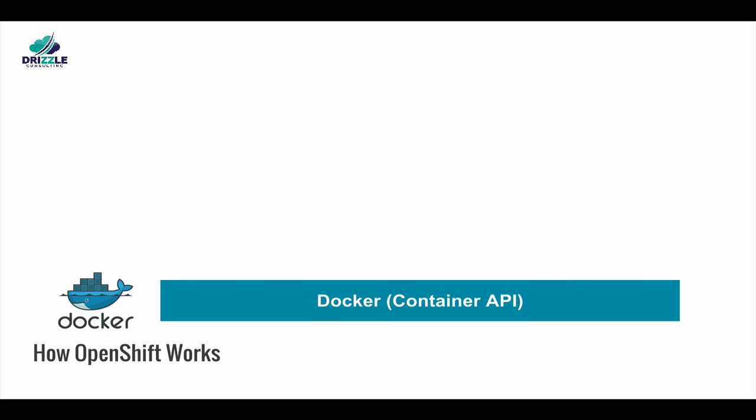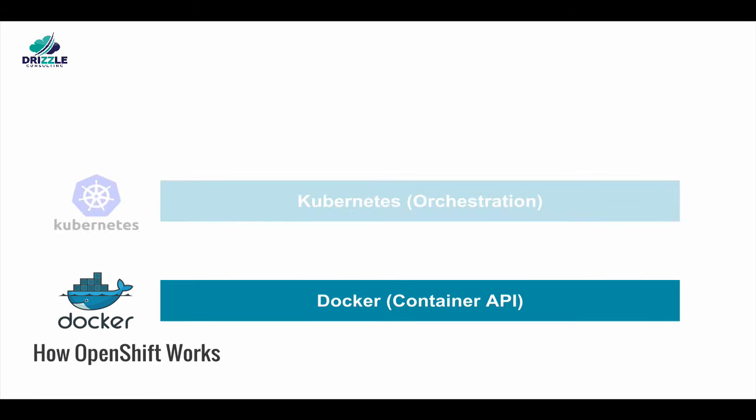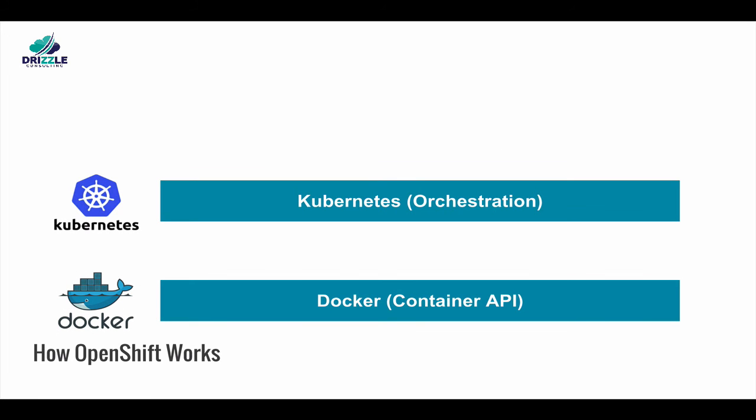OpenShift is built on top of core technologies: Docker-based containers and Kubernetes for orchestration. Docker is a lightweight, portable format that provides images of an application to run on different environments. It also includes all the dependencies needed for the application and underlying systems to get deployed and run as needed.